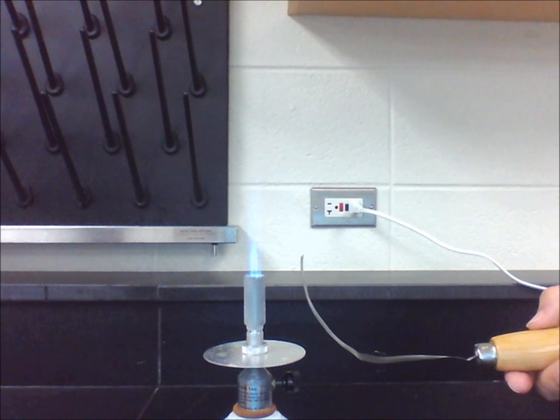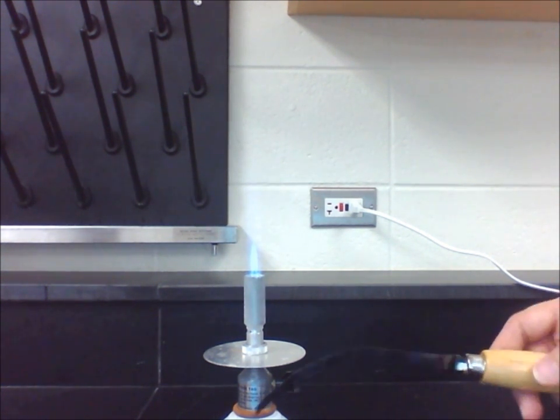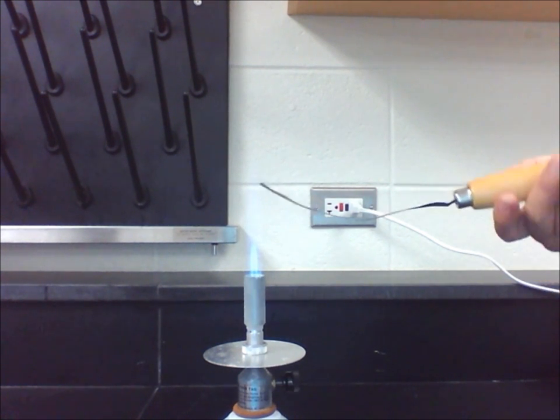What will happen if we heat the other side of the metal strip? It continues to bend in the same direction.